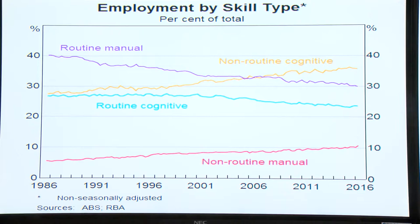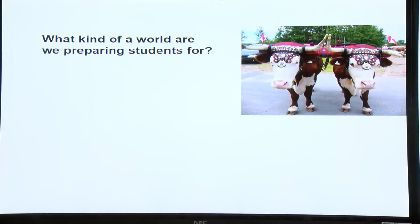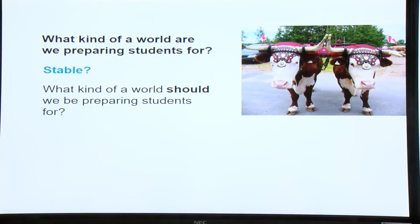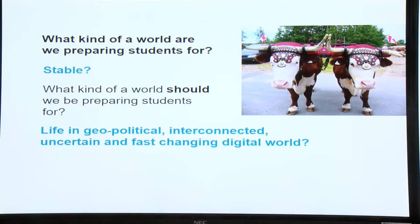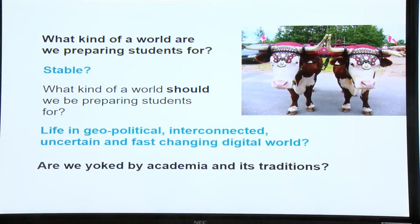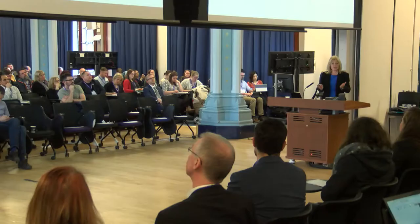What kind of world are we preparing our students for? Is it stable? We've only got to look at the UK in the last two years — who would have thought we would have been in the situation we are in with the turmoil in government? I would argue we're in a very geopolitical world — it's interconnected, uncertain, fast-changing, and most definitely digital. That's what we have to be preparing students for. While all our traditions are fantastic, sometimes we have to be careful that they don't prevent us from going forward. That's a difficult balance to get right.